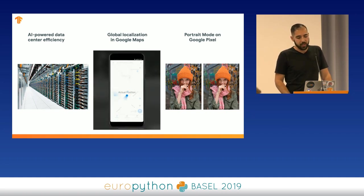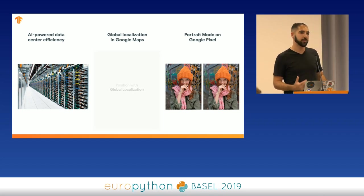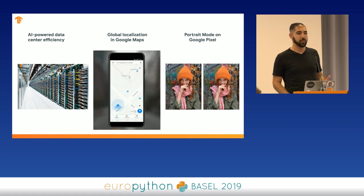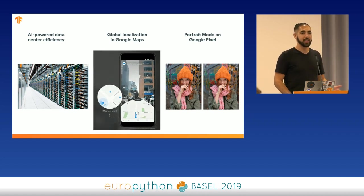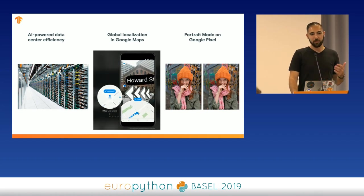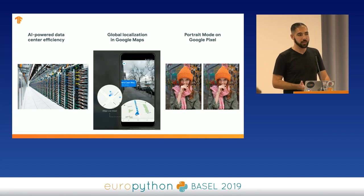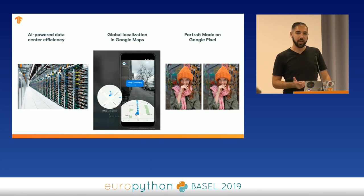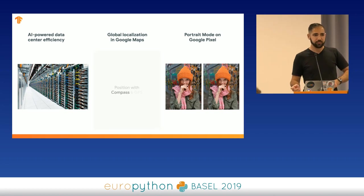We're also using these technologies for global localization in Google Maps. For those of you who've used Google Maps, we have an augmented reality feature where if you're walking through a city such as Basel, you can use it to help you get from point A to point B directly on your phone — you can see the directions actually showing up on your screen so you know which street to go down.